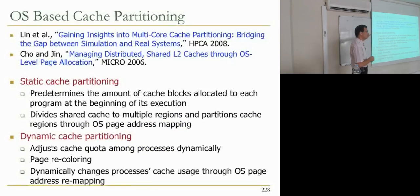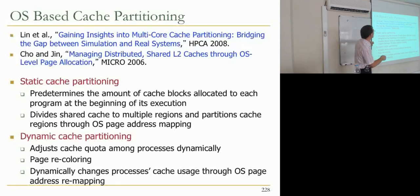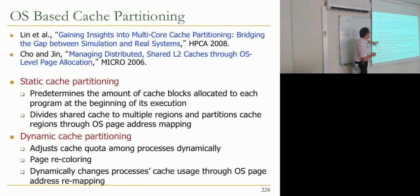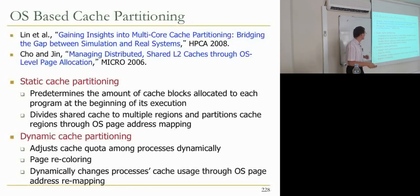Two approaches: static cache partitioning predetermines the amount of cache allocated to each program at execution start, dividing the shared cache into multiple regions through OS page address mapping — minimal overhead since the partition never changes. Dynamic cache partitioning adjusts cache allocation among processes by recoloring pages, dynamically changing process cache usage through OS page remapping.